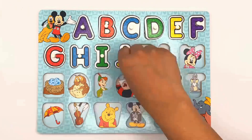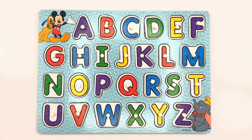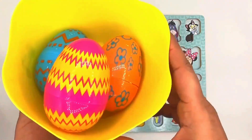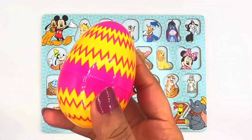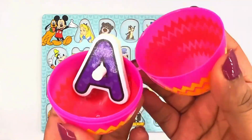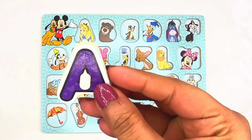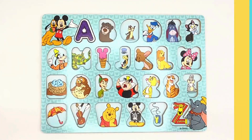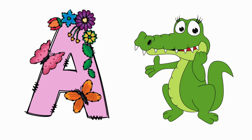Hi friends, let's learn ABCs. Oh no, where are all my ABCs going? Let's find them. Let's see what's in this pink egg. Let's open it. I see the letter A. A for alligator.